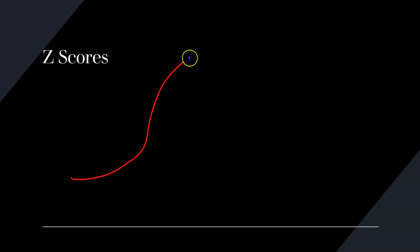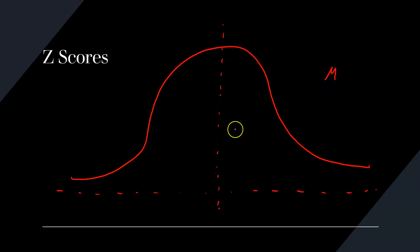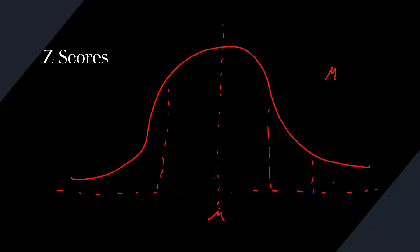So we established earlier on that if we had a distribution curve, we could get information about the relationship between standard deviations and the probability of an event happening. If we knew what the mean of some data was and we could work out its standard deviations, we can understand relationships between the probability of events happening.